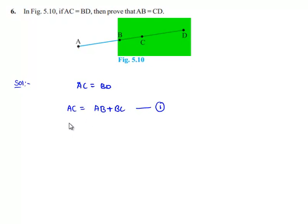And let us find the value of BD from the figure. From the figure BD can be written as BC plus CD. Let us name it as equation number 2.